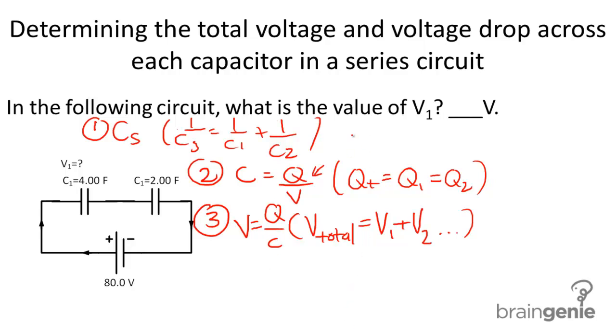So the first step, determining the equivalent capacitance. We already conveniently did this two problems ago in the first skill. So CS is going to be equal to 1.33 farads. We have that information.